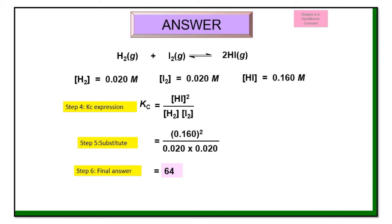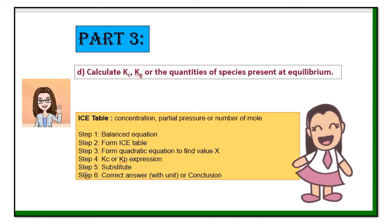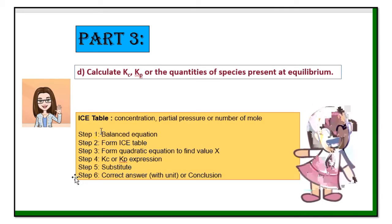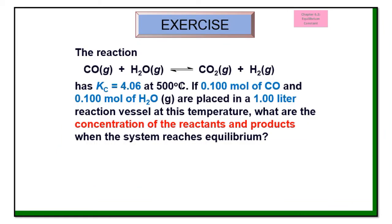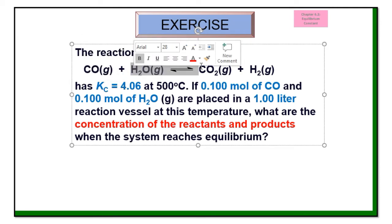So we follow steps 1 through 6 as discussed. Next, continue with another exercise. The equation is given. Kc is 4.06 at 500 degrees Celsius. We have 0.1 mol of carbon monoxide and 0.1 mol of water, with a volume of 1 liter. The question asks for the concentration of the reactants and products, so we need to follow the concentration of all species.